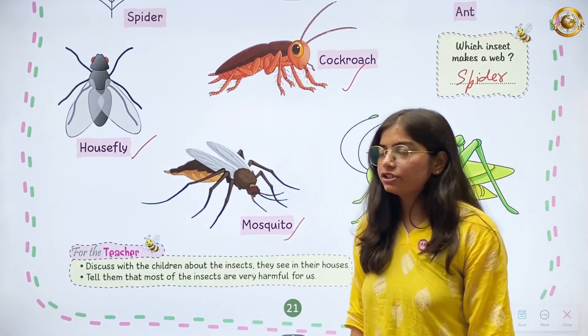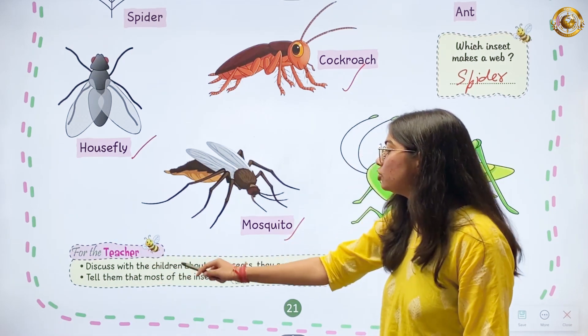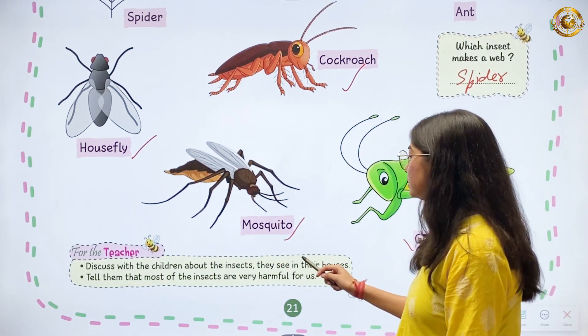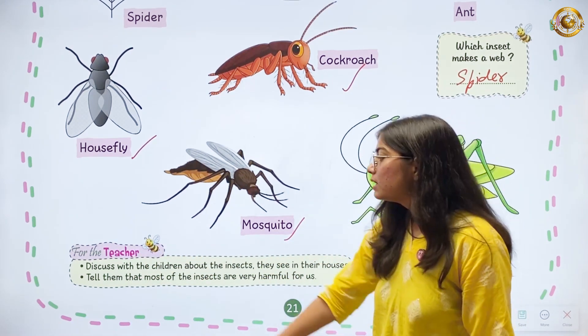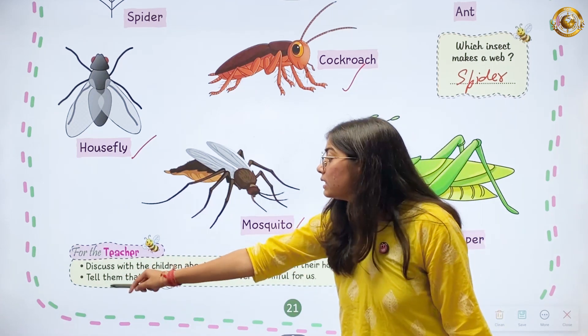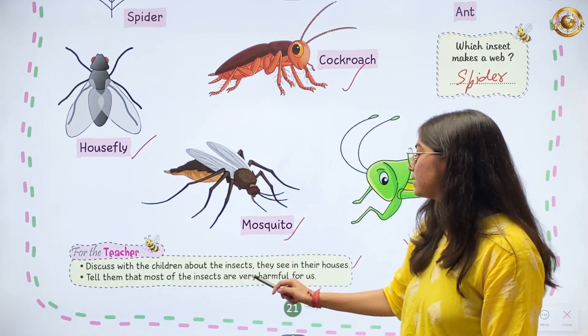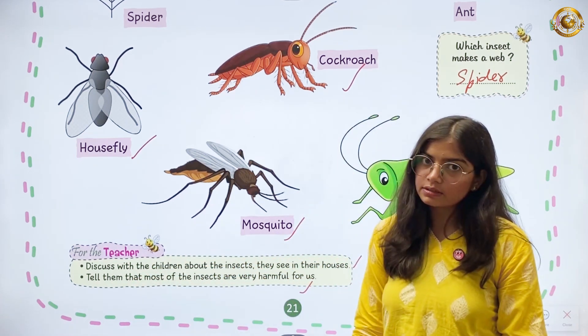For the teacher: discuss with the children about the insects they see in their houses. Next, tell them that most of the insects are very harmful for us.